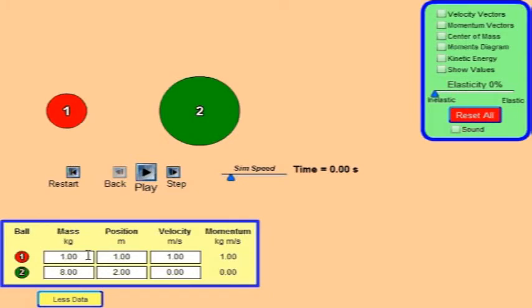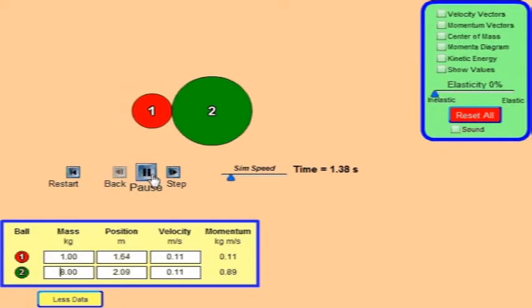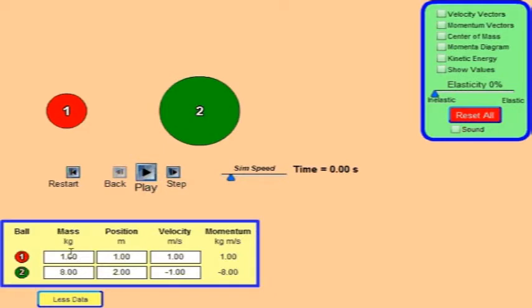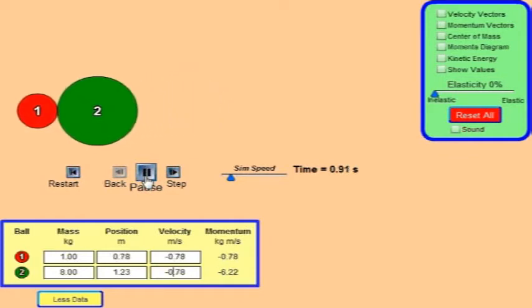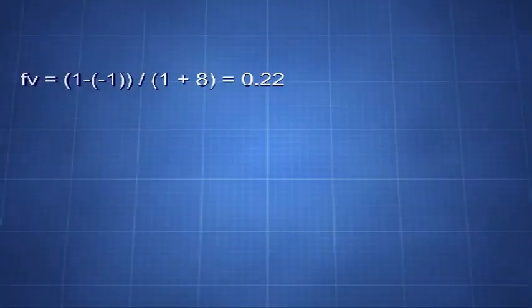Or with yet another example, if m1 is 1 and m2 is 8 at the same velocities. fv equals approach velocity divided by 1 plus 8 equals 0.11. Now let's try another example where v2 is not 0. Leaving the masses unchanged, let v2 be minus 1 meters per second.